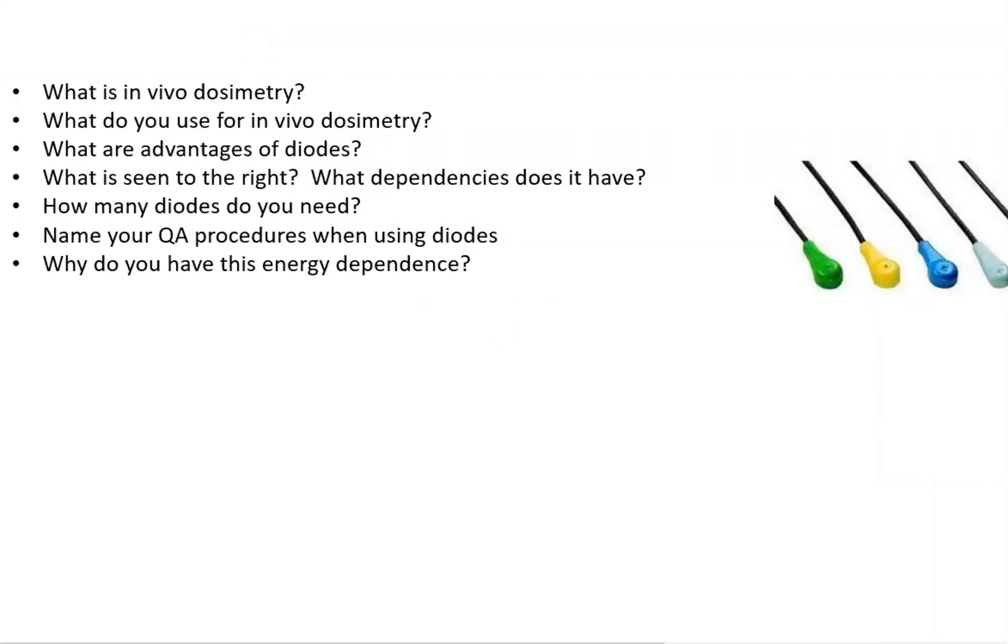Today, we're going to dive into diodes a bit more. So first of all, what is in vivo dosimetry? What do you use for in vivo dosimetry in your clinic? What are advantages of diodes? What is seen to the right and what dependencies do they have? How many diodes do you need? Name your QA procedures when using diodes. And why do you have an energy dependence?